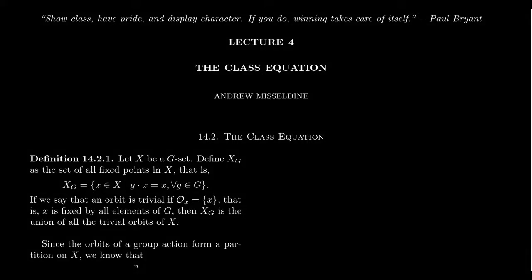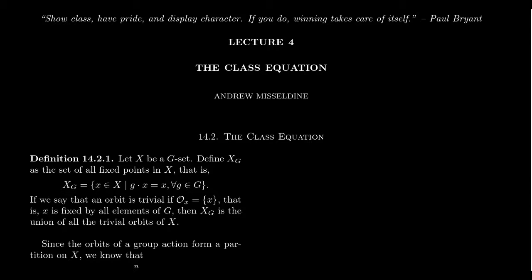Welcome back to our lecture series, Math 4230, Abstract Algebra 2 for students at Southern Utah University. I'll be your professor today, Dr. Andrew Misseldein. In lectures 1 through 3, we introduced the idea of group actions — a set X upon which some group G is acting, often referred to as a G set. In lecture 4, we're going to talk about the so-called class equation, which when you first look at it feels like a somewhat obvious observation, but can have powerful consequences, especially for P groups.